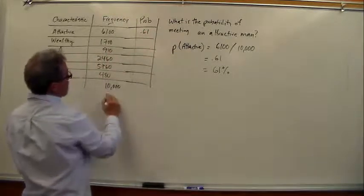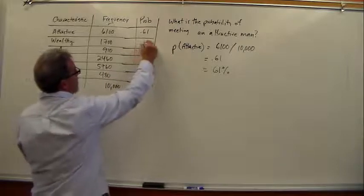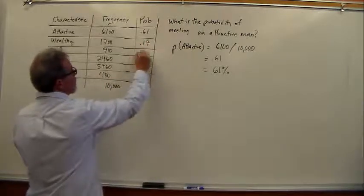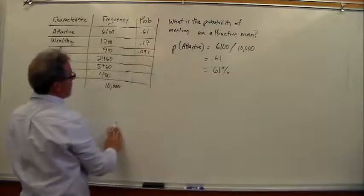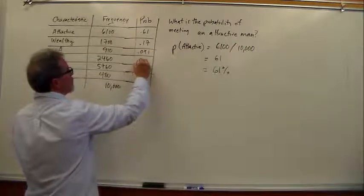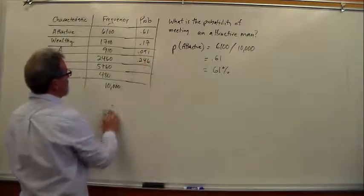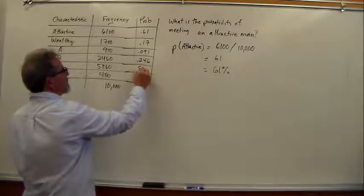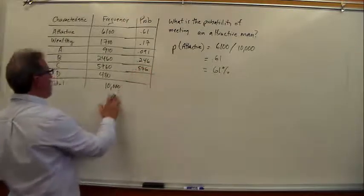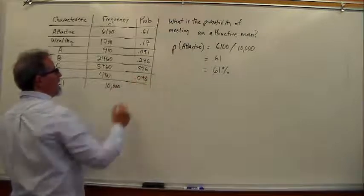So, 6,100 out of 10,000 is a probability of 0.61. Wealthy, 1,700 out of 10,000 is 0.17. A students, 0.091. B students, 0.246. C students, 0.576. And D students, 0.048.